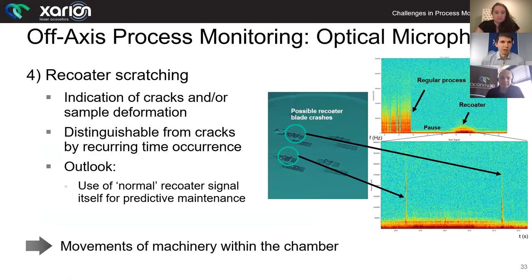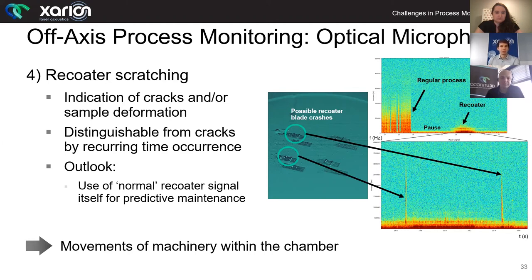As we can see in the video, the recoater is also something that produces acoustics, and we can assess that information as well — especially if the process or the part for some reason starts to deform, possibly due to prior cracks. The recoater is then scratching across the part, producing a significant signal which we can use to output a warning and monitor this deviation. We can also use the regular recoater signal for predictive maintenance use. It's good to point out we're not only active whilst the laser is doing its job, but actually during phases before and after.